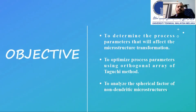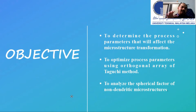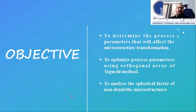Moving to objectives. The first objective is to determine the process parameters that will affect the microstructure transformation. The second is to optimize the process parameters using the orthogonal array of the Taguchi method. After collecting the data, we optimize the parameters using the Taguchi method. Lastly, the third objective is to analyze the spherical factor of non-dendritic microstructure, which is the main goal of this project.